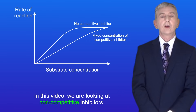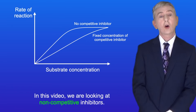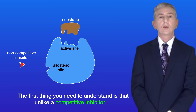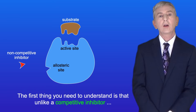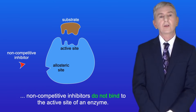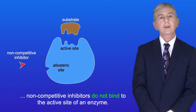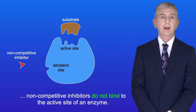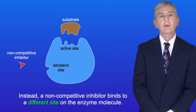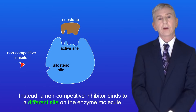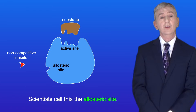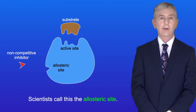Now in this video we're looking at non-competitive inhibitors. Unlike a competitive inhibitor, non-competitive inhibitors do not bind to the active site of an enzyme. Instead a non-competitive inhibitor binds to a different site on the enzyme molecule, and scientists call this the allosteric site.